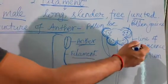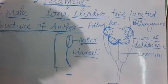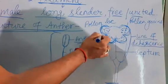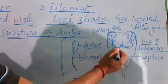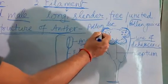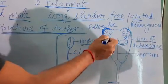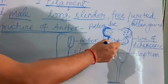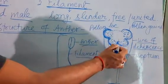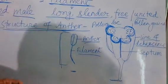The two pollen sacs are connected by the connective tissue. Each pollen sac has two lobes, making the anther a bilobed structure. This bilobed structure of the anther is connected by the septum.